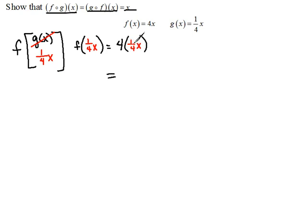four and one-fourth cancel each other out. So that just becomes x. And that's the first part.